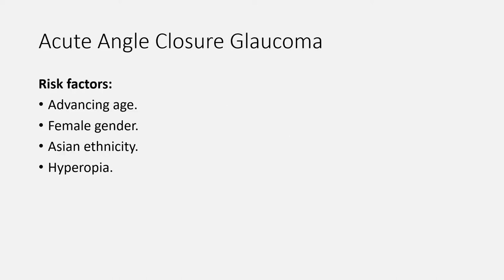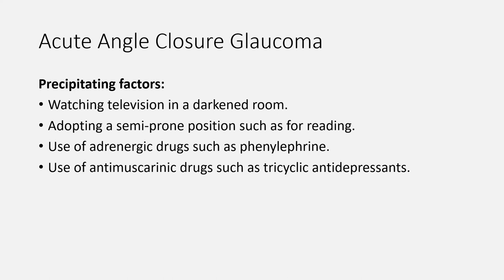Now let's move to the different emergencies of the eye, and let's start with acute angle closure glaucoma. Glaucoma is a serious condition that can cause irreversible loss of vision. Acute angle closure glaucoma is an ocular emergency that results from a rapid increase in intraocular pressure due to outflow obstruction of aqueous humor. Several factors lead to the obstruction, but the major predisposing factor is the structural anatomy of the anterior chamber, leading to a shallower angle between the iris and the cornea. The risk factors include advancing age, female gender, Asian ethnicity, and hyperopia. It is important to know the precipitating factors because one of them may be the key to the exam answer.